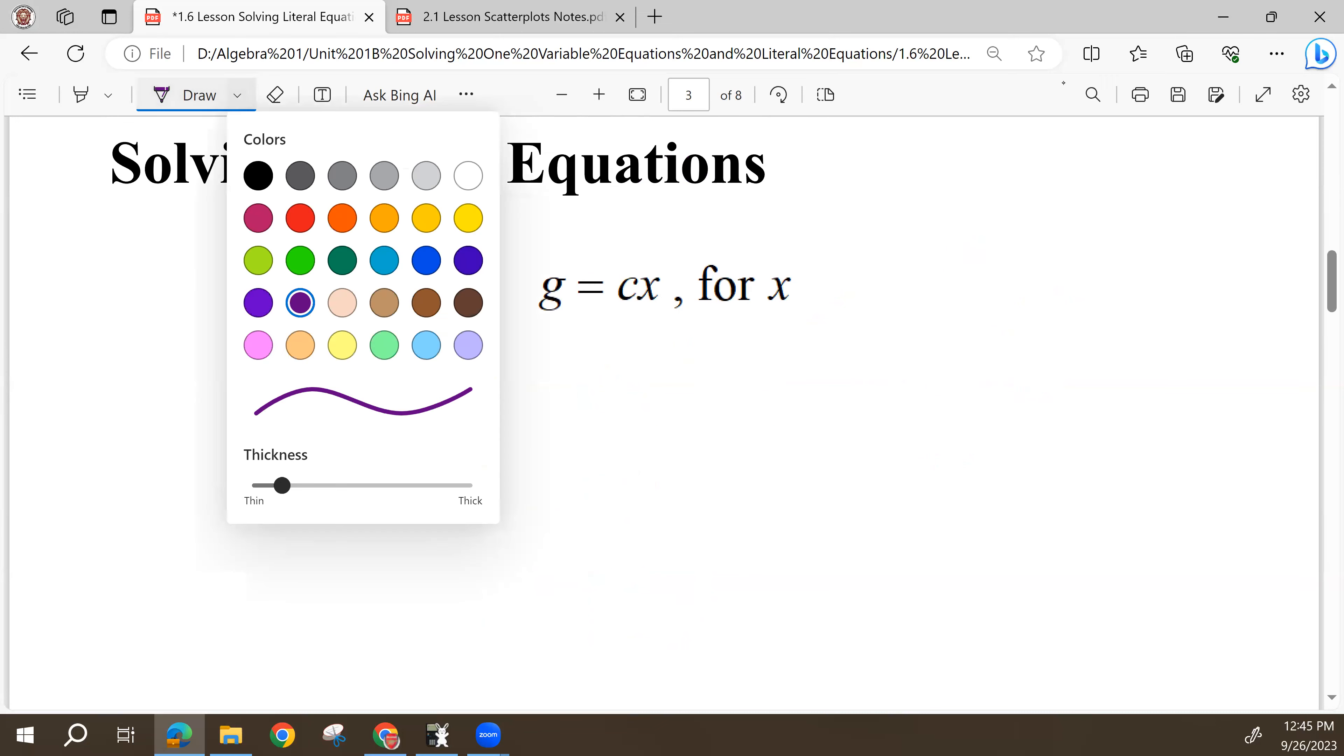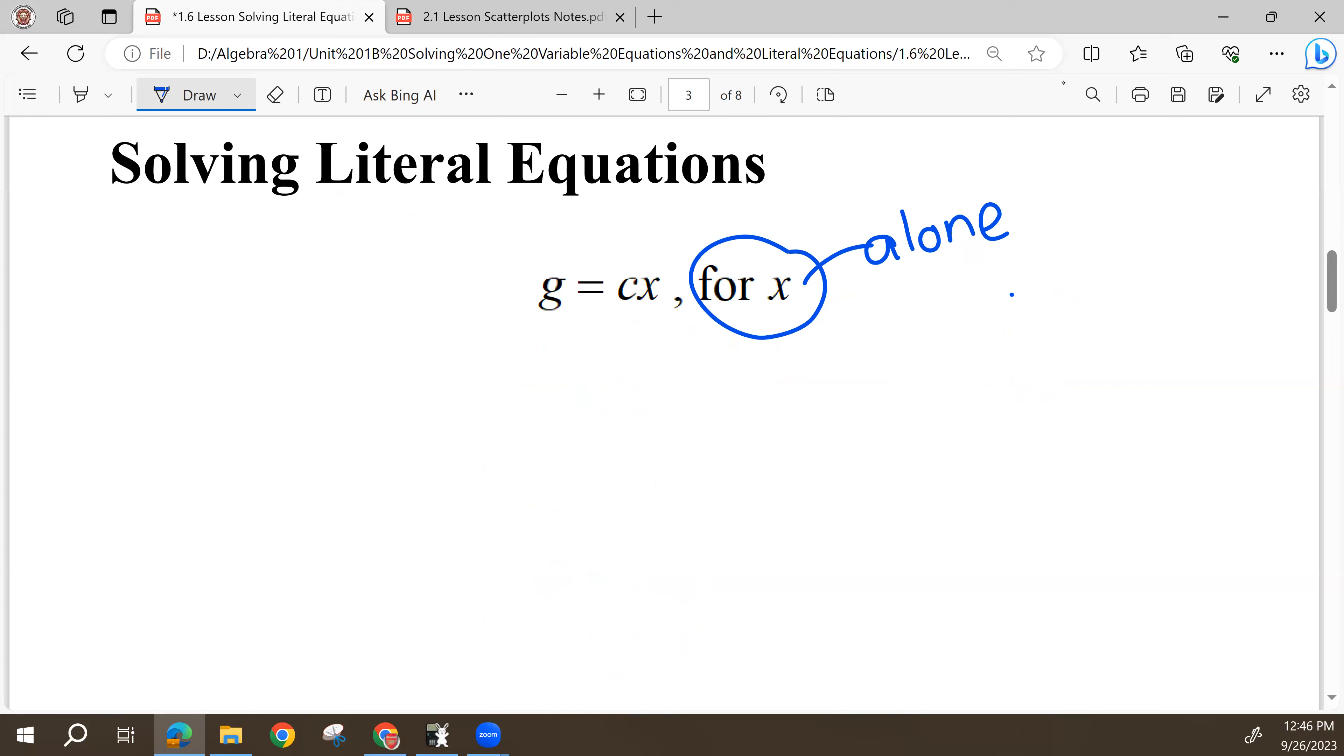So we can really solve any equation by getting the variable we want alone. So now we want X alone. We want X all by itself. That's what it means to solve for X here. So I'm going to move everything away from X and try to get X on one side of the equal sign all by itself. So right now, X is with C. They are being multiplied.